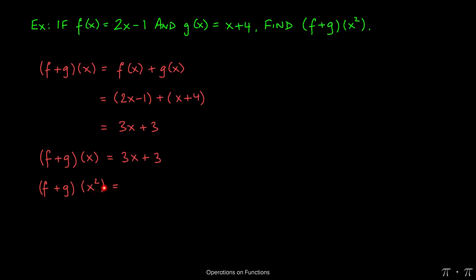in this case x squared is going to replace the x. This will yield 3 times x squared plus 3, or simply 3x squared plus 3. And we can denote it as such: f plus g of x squared is equal to 3x squared plus 3.